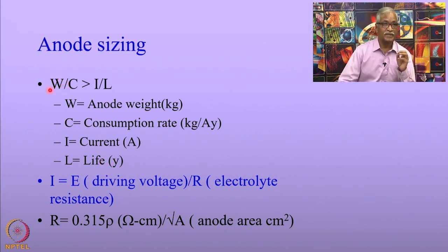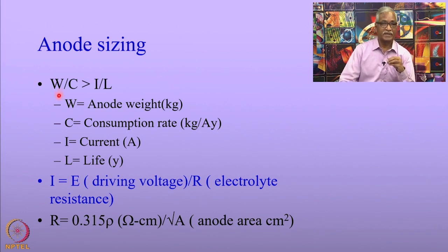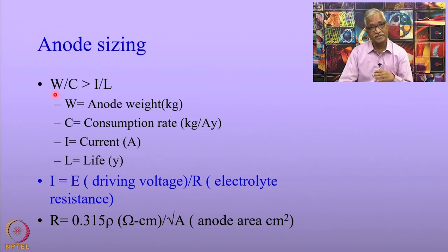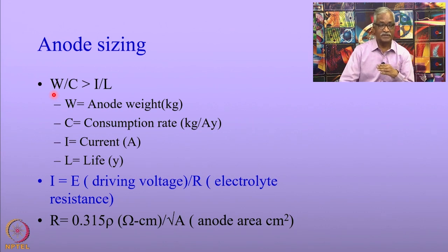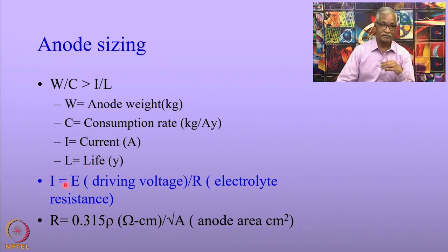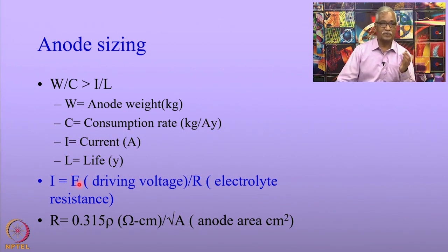The anode size selection also depends upon whether there is adequate driving voltage. The current required is governed by the resistance of the electrolyte, as seen during cathodic protection of pipelines. The driving force of a given anode is known, and it is necessary that the resistance R be adjusted accordingly. There is a relation between R and the area of the anode.